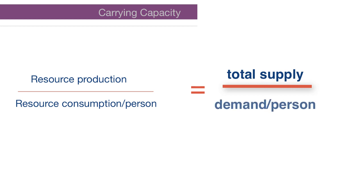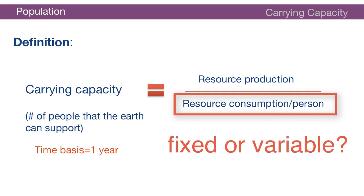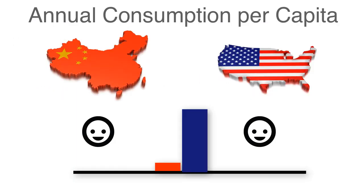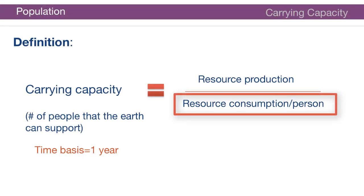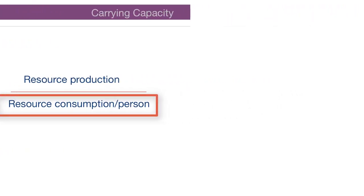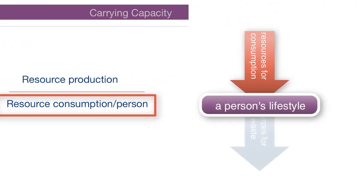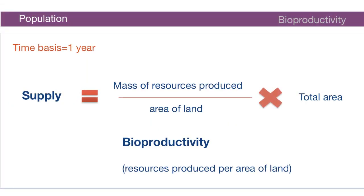The number of people that the earth can support is the total supply of resources divided by the demand of resources per person. If we consider just two different geographical regions, we see that the resources consumed per person are very different. The wastes generated must also be processed by the land, so resource consumption per person includes resources for both producing life support systems and processing waste streams.